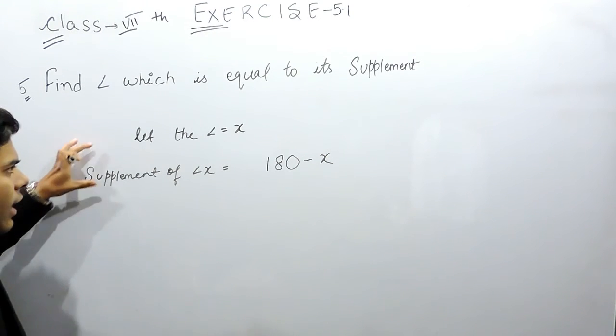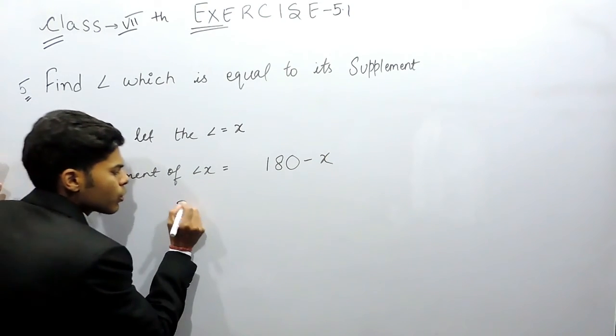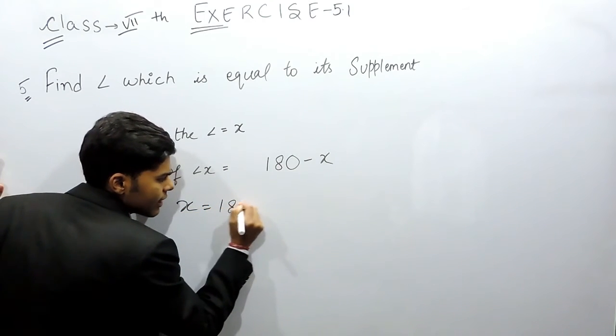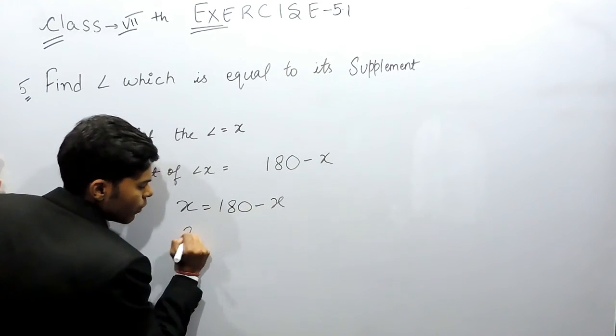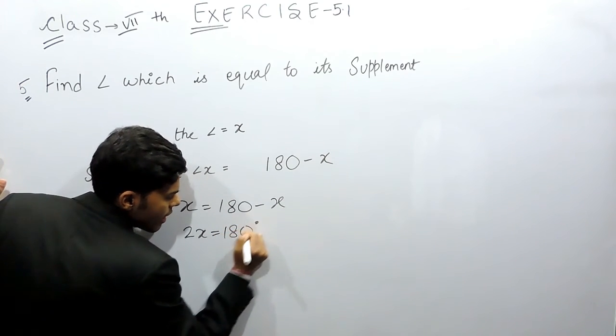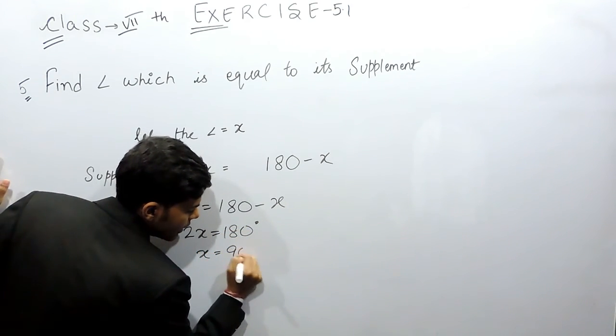Now we are given that the supplement and the angle are equal, so x will equal 180 minus x. This gives us 2x equals 180 degrees, and x equals 90 degrees.